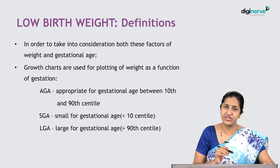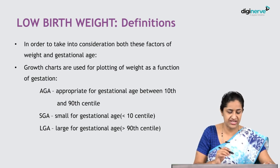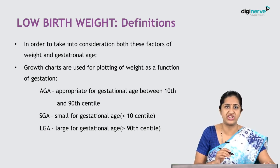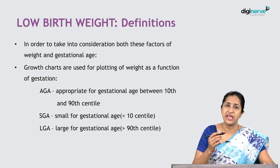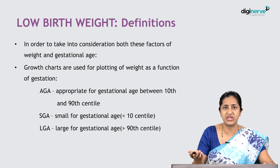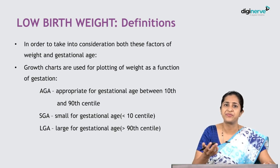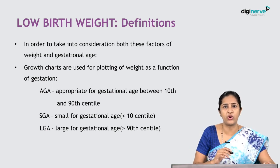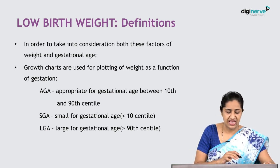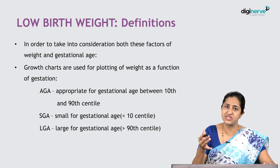The second classification is small for gestational age. For example, a baby at 36 weeks gestation who weighs only 1.2 to 1.6 kg has 36 weeks maturity but is significantly underweight for that gestation.